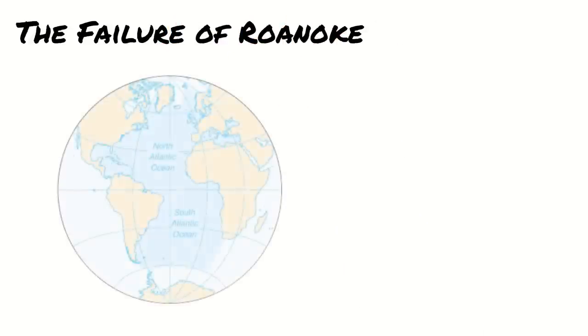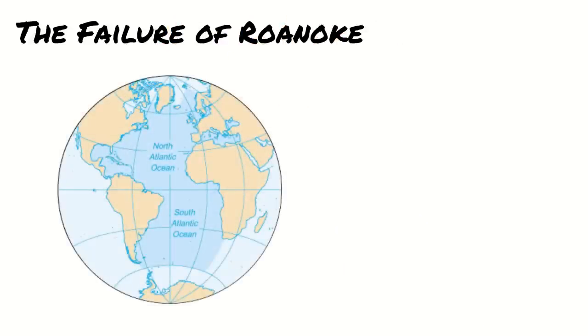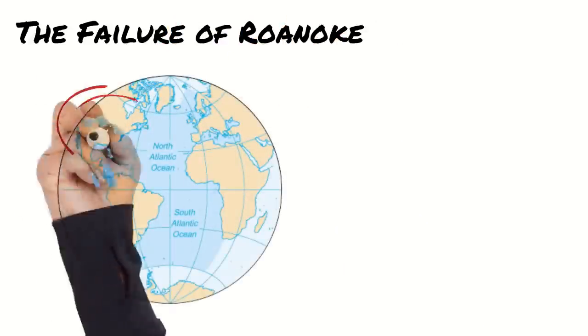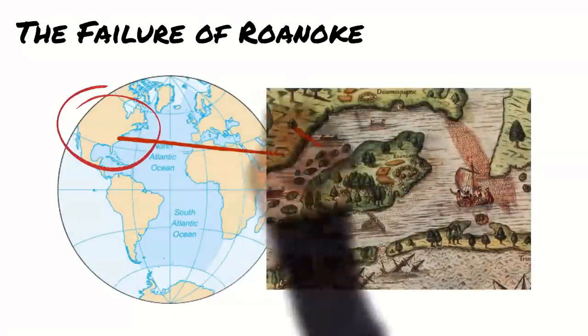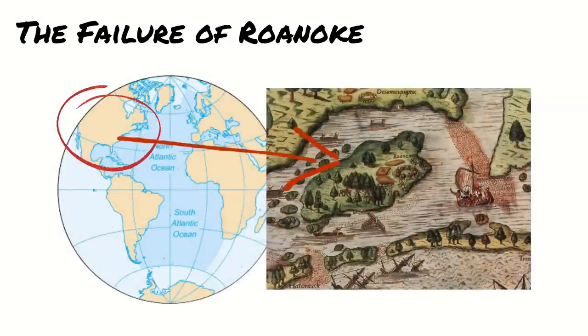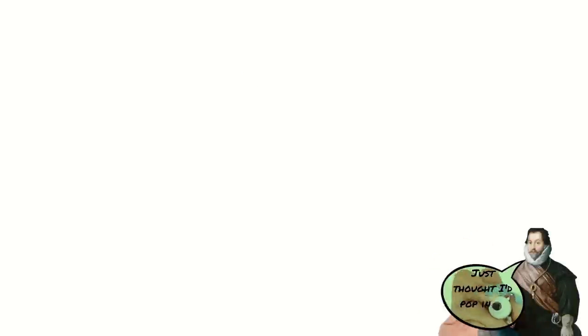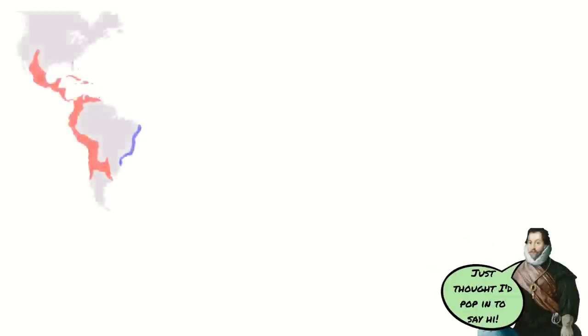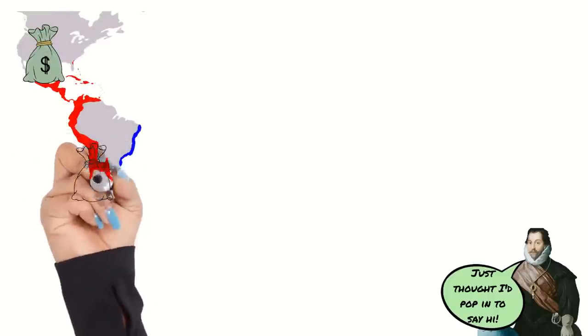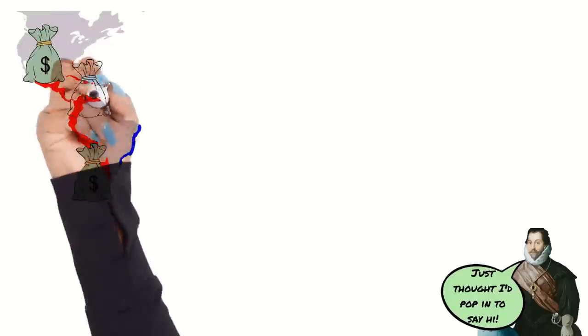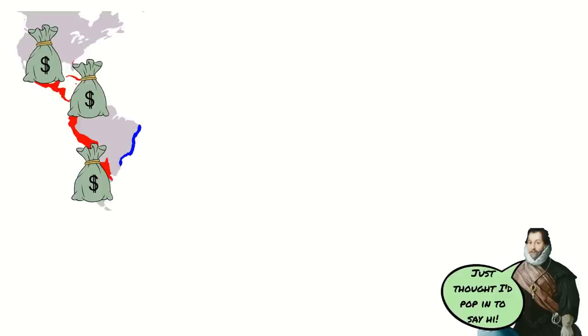Today we're going to be looking at England's attempt to build colonies in the North American continent and the eventual failure of the Roanoke Colony. Following on from Sir Francis Drake's success in navigating the globe, England became more ambitious and wanted to get a toehold in the extremely profitable New World.